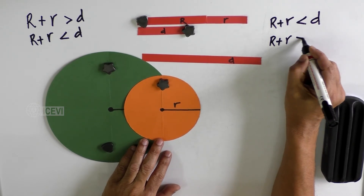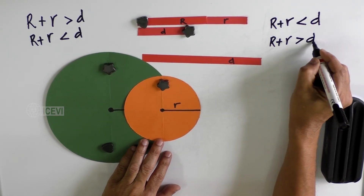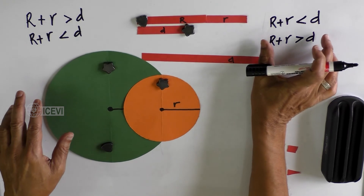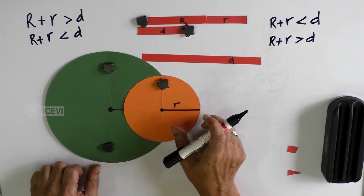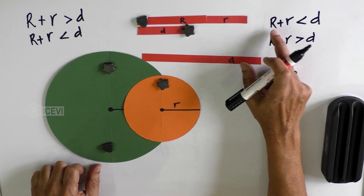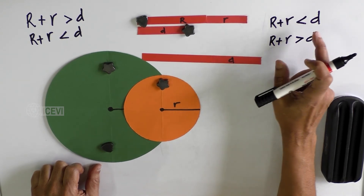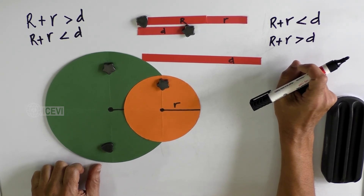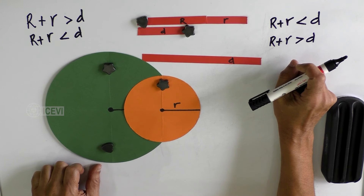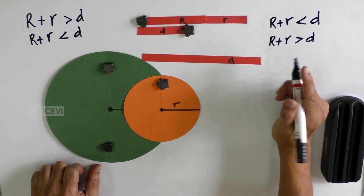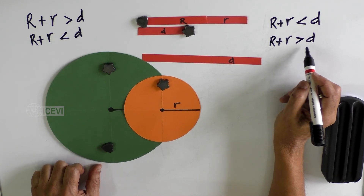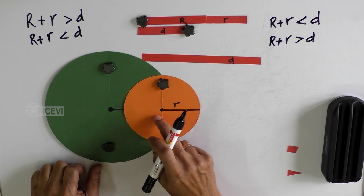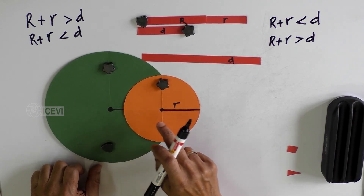Whenever you get numbers saying that capital R plus small r is greater than the distance between the centers, you can clearly say that the circles are intersecting. When the sum of the two radii is greater than the distance between the centers of the two circles, you can clearly say that the circles are intersecting.